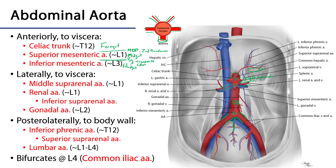The next branch at approximately the L2 level will be the gonadal arteries — the left gonadal and the right gonadal. Those supply the gonads, so the ovaries or the testes, with blood, and sometimes they're more specifically referred to as either the ovarian or testicular arteries.